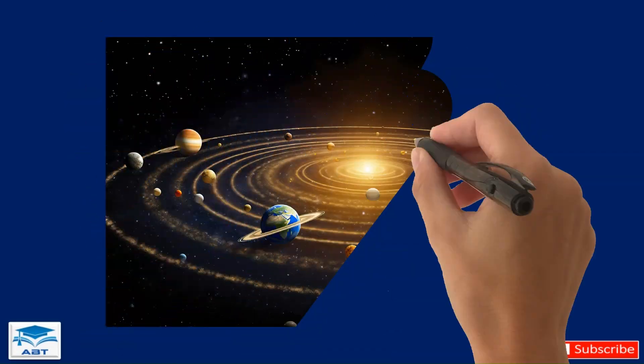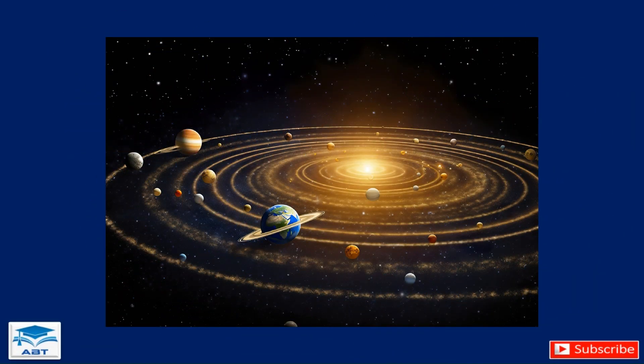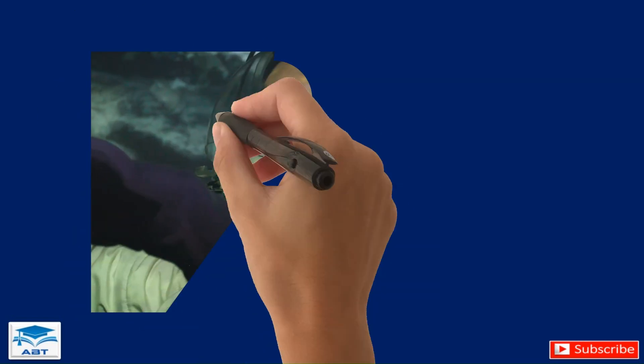Even the planets in our solar system orbit the sun because of its enormous gravitational pull. Without gravity, everything would just float away.